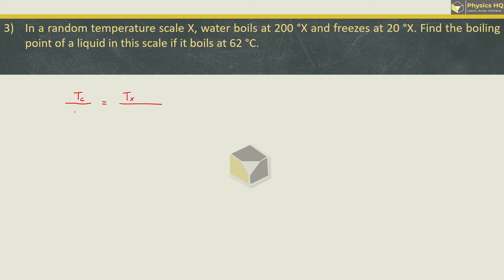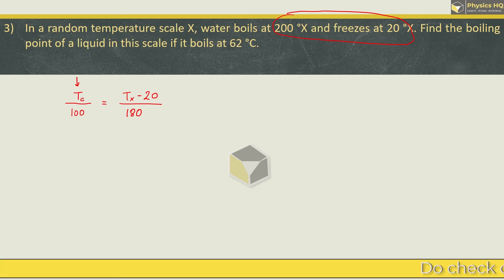Next we will see. In a random temperature scale X, water boils at 200 degrees X and freezes at 20 degrees X. Find the boiling point of a liquid in this scale if it boils at 62 degrees Celsius. Here we need to first equate temperature in Celsius with temperature on the X scale. So temperature in Celsius, 0 to 100 is freezing point to boiling point. The scale will change to 100 degrees Celsius. Here the scale is 180. And when temperature in Celsius is 0, temperature on X scale is 20.